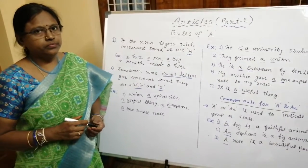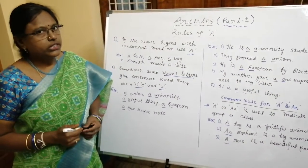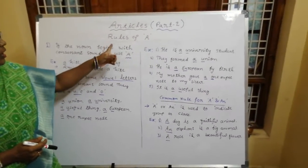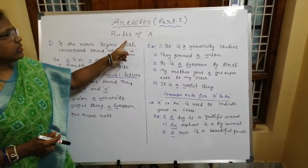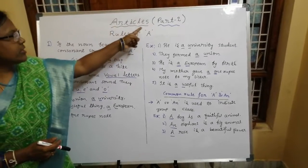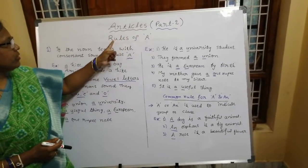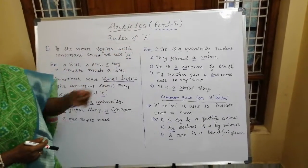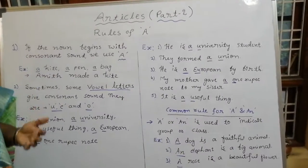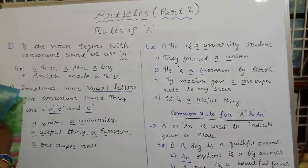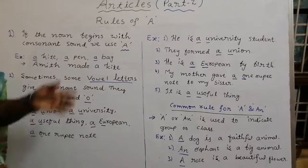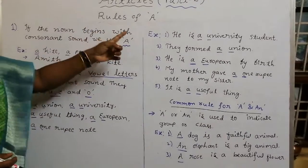Hi everyone. Welcome to Angel English Academy. Today we are going to learn about indefinite article A. Here articles are divided into indefinite article A. Already we have learned indefinite article AN — where we use AN? Before vowel sound we use AN. Now we are going to learn A.